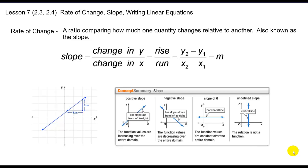Today we talk slopes, rates of change, and writing linear equations. Rate of change is just a fancy statement to say it's a ratio to compare how much one quantity changes relative to another. It's also most commonly known as the slope. So when we talk rate of change, we're talking slope.